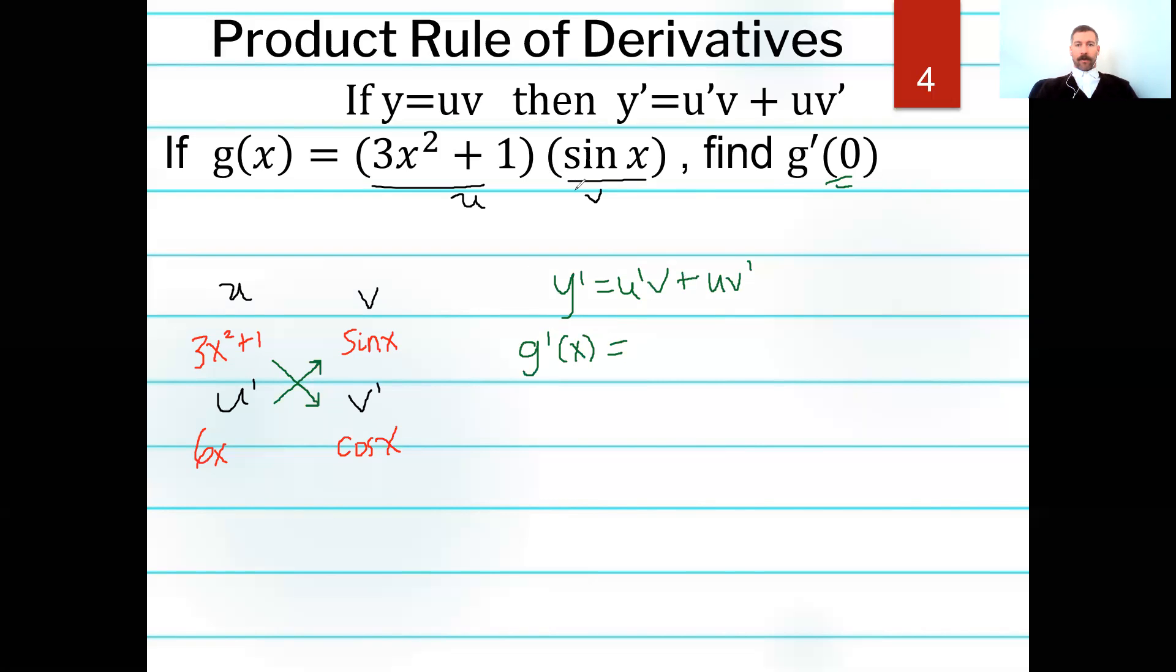So what's u prime here? U prime would be 6x. And what's important here is I'm going to use parentheses to show that I'm multiplying and to show that group that I have times v, which is going to be sine of x. So once again, I'm going to use parentheses to show my grouping. And then I'll put a plus in between because that's part of our formula. And then I have times u times v prime. So u is going to be 3x squared plus 1, and then times v prime is going to be cosine of x.